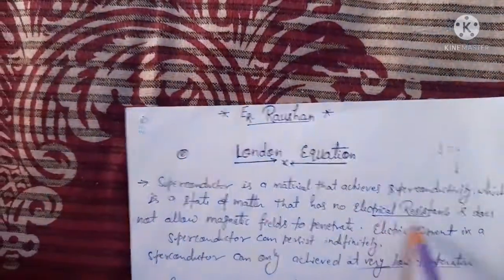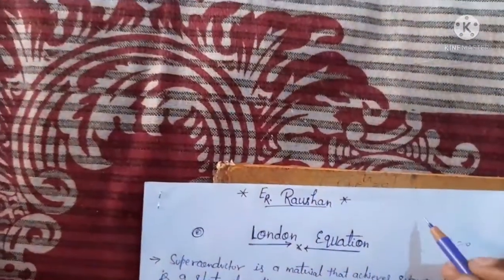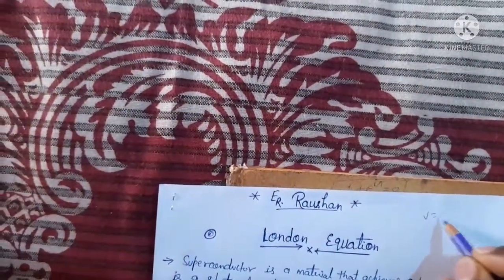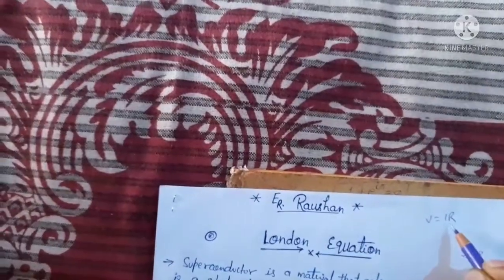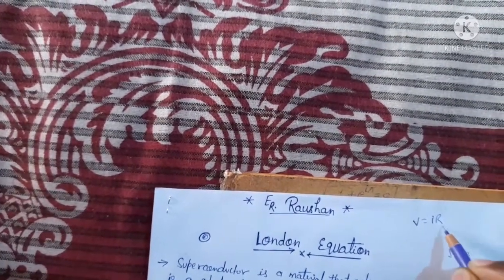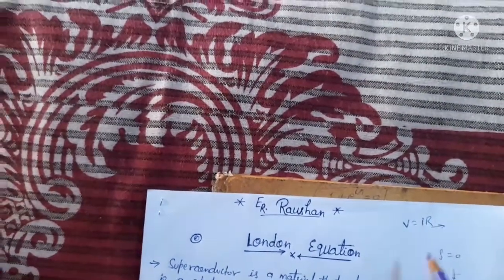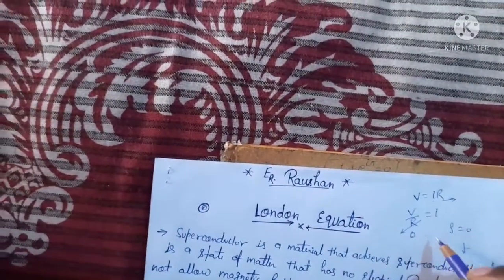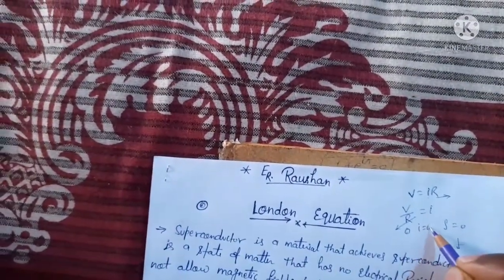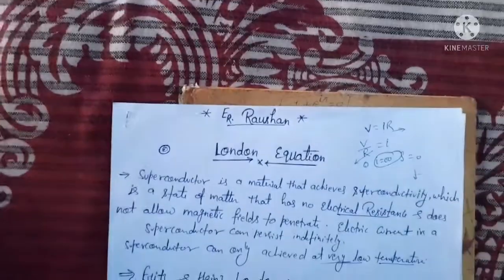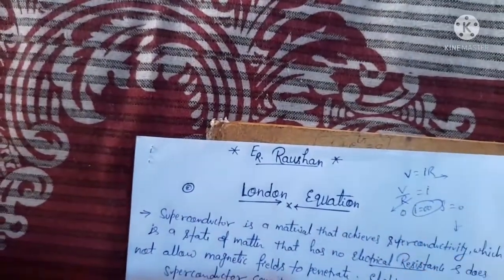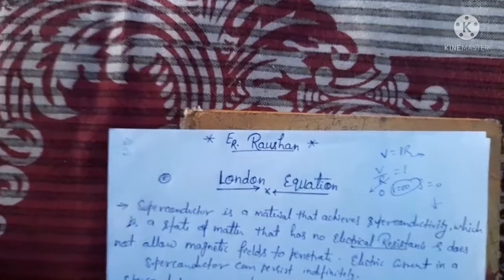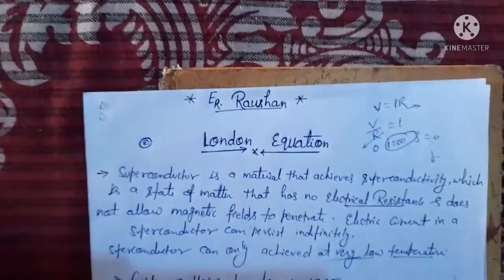Here electrical resistance equals zero. You know Ohm's law: V equals IR, where I equals current, V is voltage, and R is electrical resistance. If electrical resistance equals zero, then the current will become infinite. This current flows without electrical resistance — the current becomes infinite.